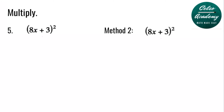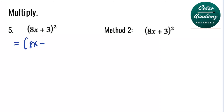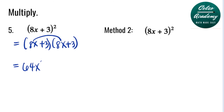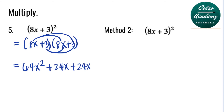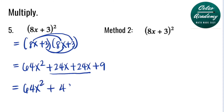Question number 5: 8x plus 3 to the second power. This is the same as 8x plus 3 times 8x plus 3. Using distributive property: 8x times 8x is 64x squared. Next, 8x times 3 is 24x. Then 3 times 8x is also 24x. And 3 times 3 gives 9. Notice we have two 24x terms, so combining them gives 48x. The final answer is 64x squared plus 48x plus 9.